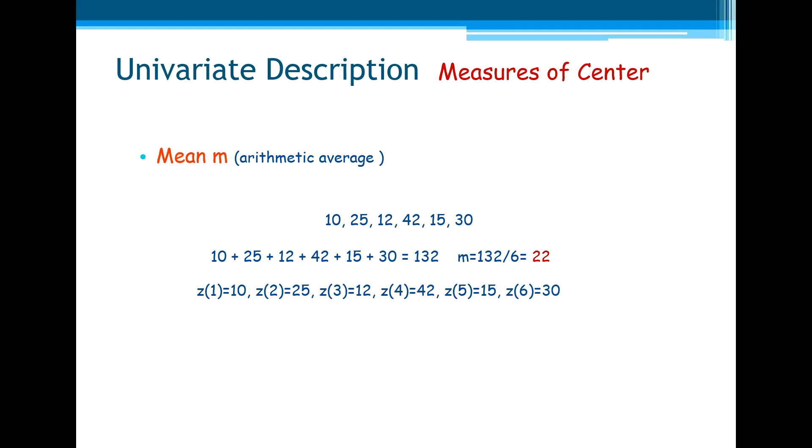Now, if we interpret the set of values by indexed variables zi, z of 1 is 10, z of 2 is 25, and so on. This is the symbolic representation, mathematical representation, of the mean.